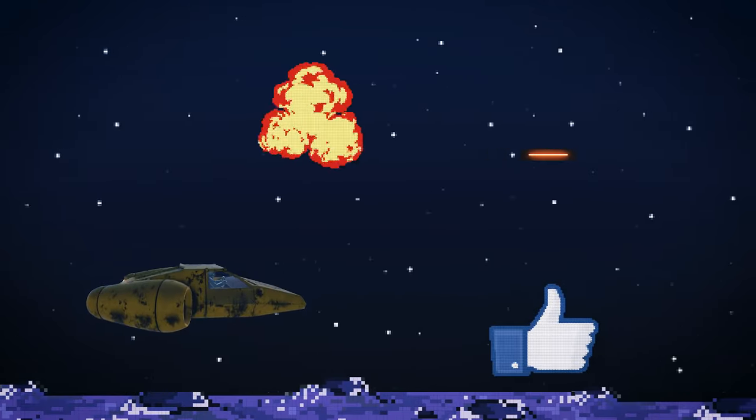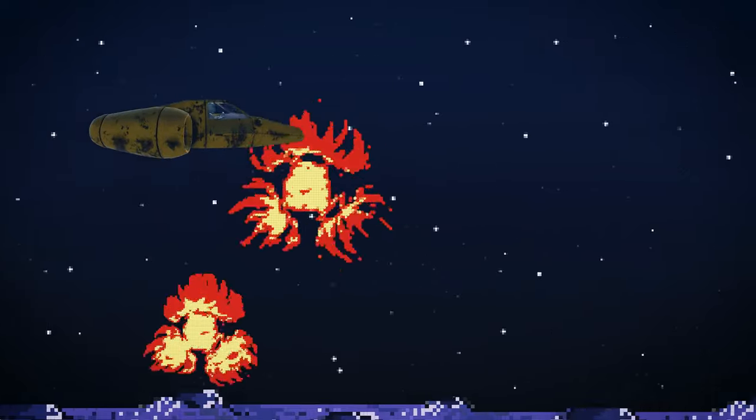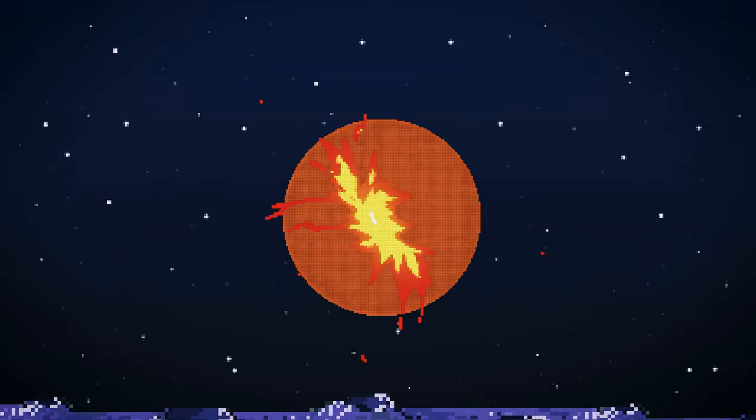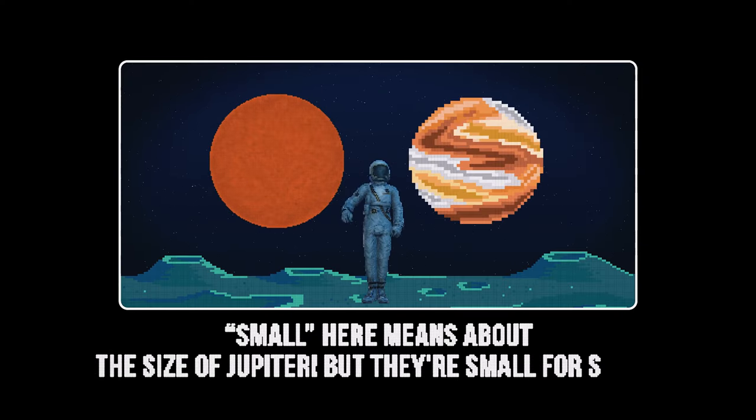Switching on our hyper light engines, we soon arrive at the Lumen 16 system. Here, we'll find one of the smallest stars out there, a brown dwarf. Small here means about the size of Jupiter. But they're small for stars.